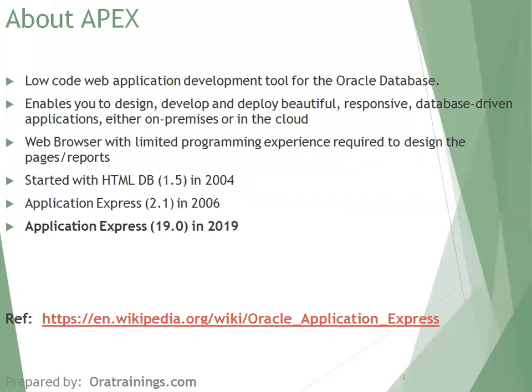Let's have an overview of Apex before we get into a deeper understanding. Apex was started in 2004, so it's around 15 years old. It started with HTML DB — designing HTML pages using database technology — and later moved to a different technological architecture called Application Express 2.1, released in 2006. The latest version is 19.0, released in 2019. It is a browser-based tool that uses Oracle database as a backend and works only with Oracle database.